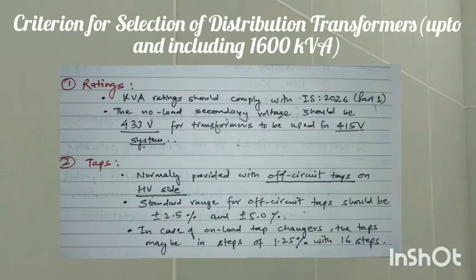Let's see the criteria for the selection of distribution transformers. First, ratings. IS Standard 2026 defines the kVA rating which should be applied for the distribution transformer, so that rating should be followed. The no-load secondary voltage should be 433 volts for transformers to be used in a 415-volt system.